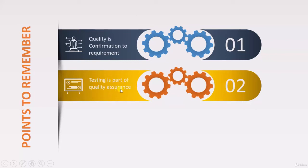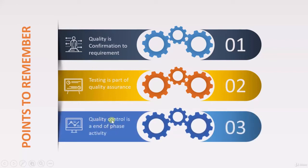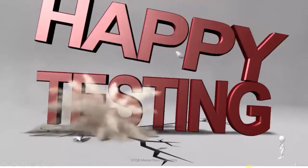Testing is part of Quality Assurance — it is not Quality Assurance itself, but part of it. The last point is that Quality Control is an end-of-phase activity. Once you complete requirement analysis, design, and coding, then Quality Control comes into picture — you check for quality, and if it is not good, you try to control it. Until then, happy testing!